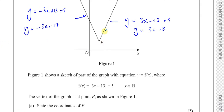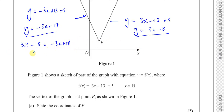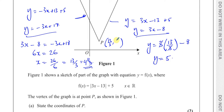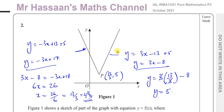Where these two lines intersect will be where P is, so we solve simultaneously. Setting 3x minus 8 equal to negative 3x plus 18, adding 3x to both sides gives 6x, and adding 8 gives 26. So x equals 26 over 6, which equals 13 over 3, confirming 4 and one third. To find the y-coordinate, substitute into y equals 3x minus 8: 3 times 13 over 3 minus 8 gives 13 minus 8, which is 5. So those are two alternative methods confirming P is at 13 over 3, 5.